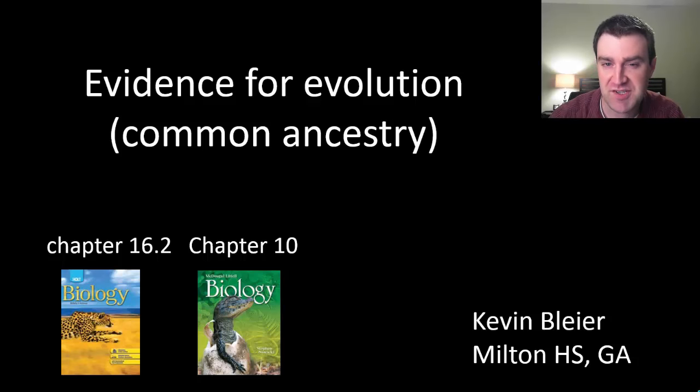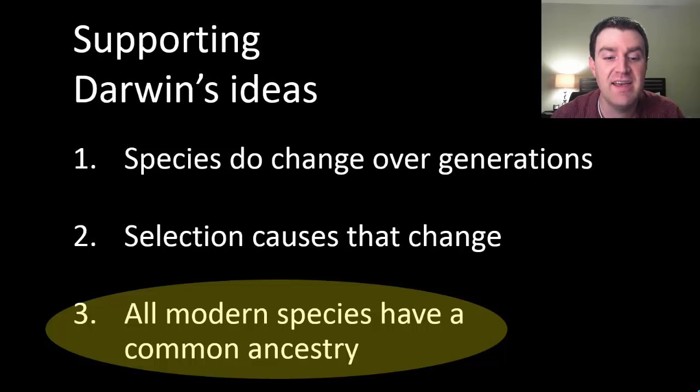So in this video we're going to finish exploring some evidence for evolution by talking about Darwin's boldest idea yet. He proposed that maybe all modern species came or descended in evolutionary history from a common ancestor. That maybe we all have something in common and the reason why we're different today is that we just fashioned different adaptations.